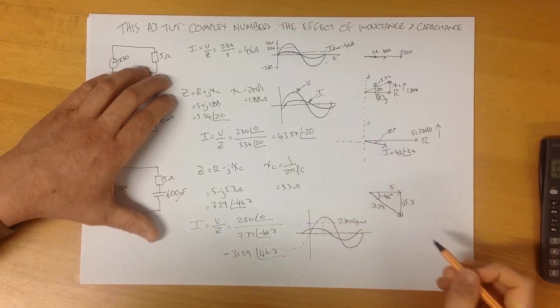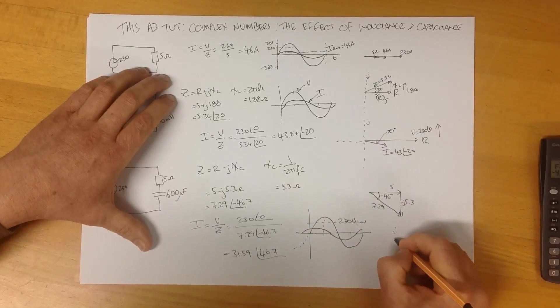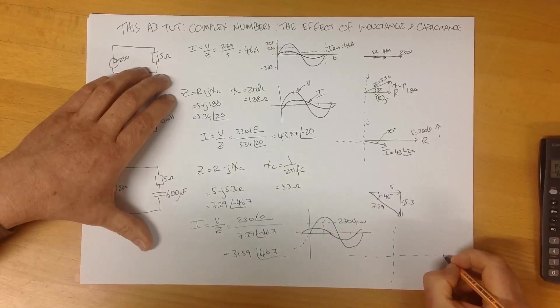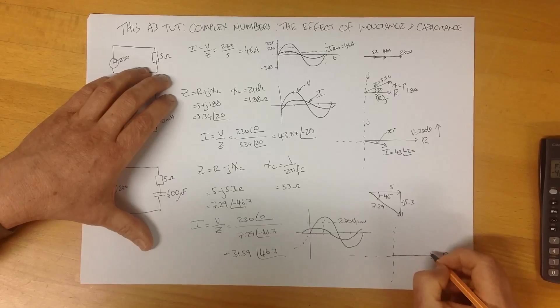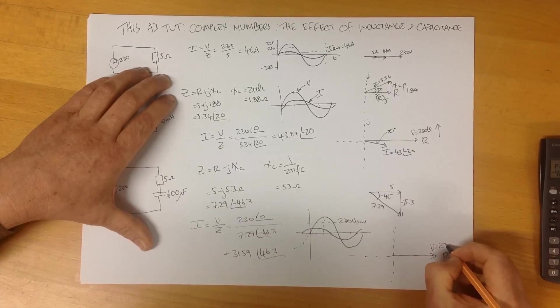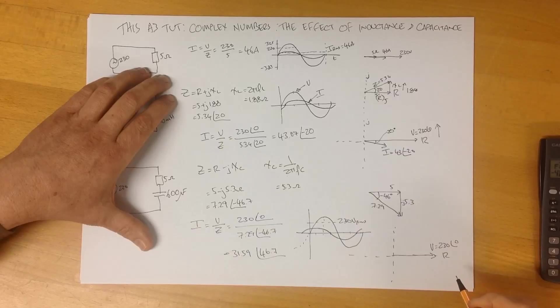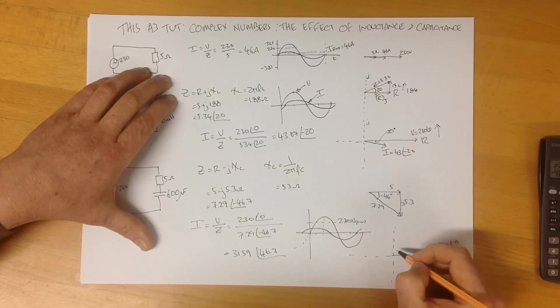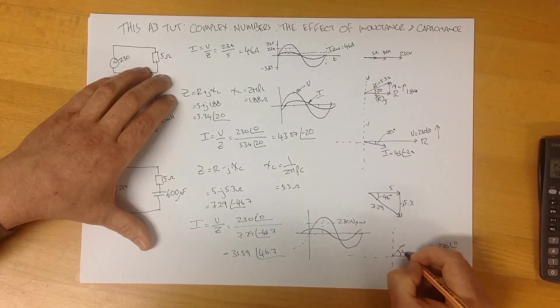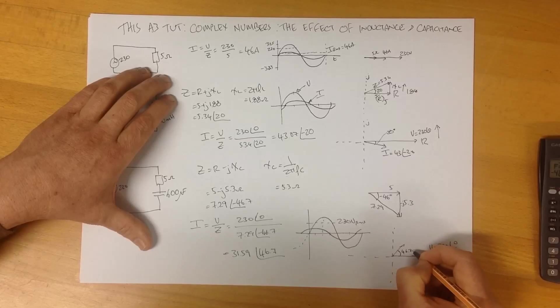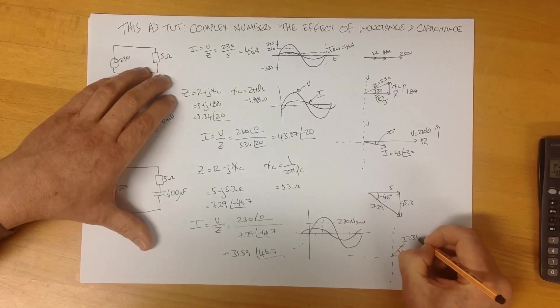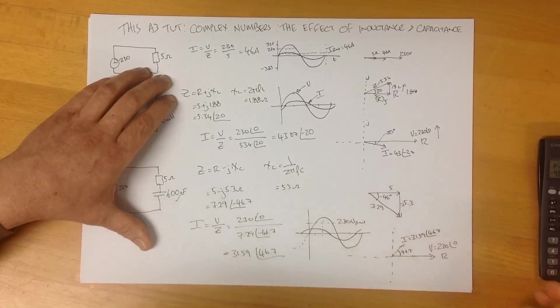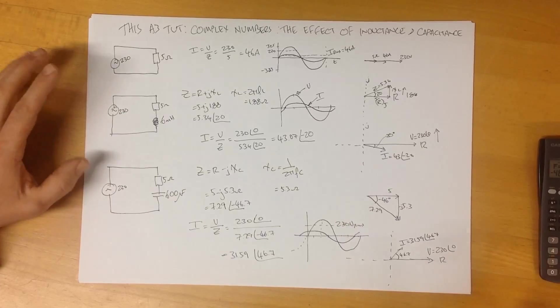If we were to plot this here in the vector domain, just like we did up here, once again, we have our real axis here with our 230 volts with an angle of 0. And our current, we've calculated at 31, leading by an angle of 46, which will be up here. So this is how things look.